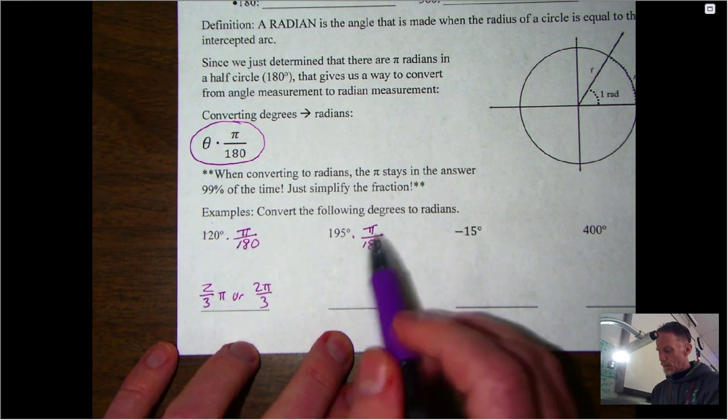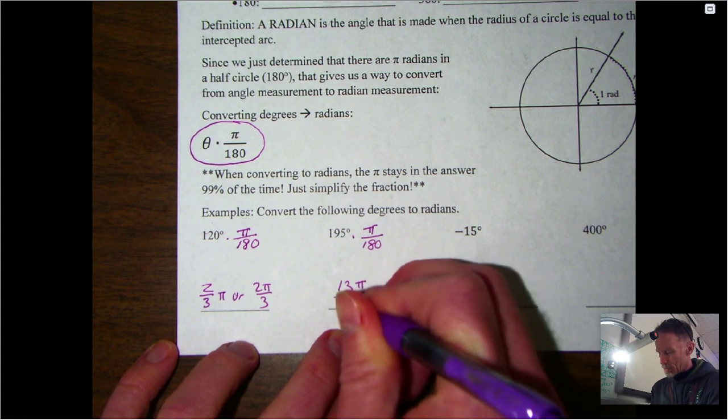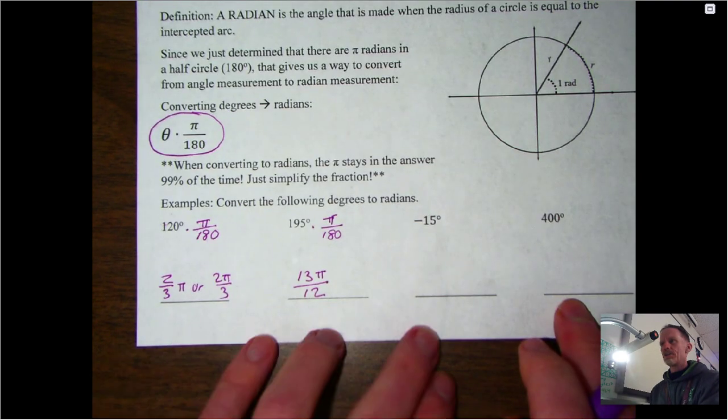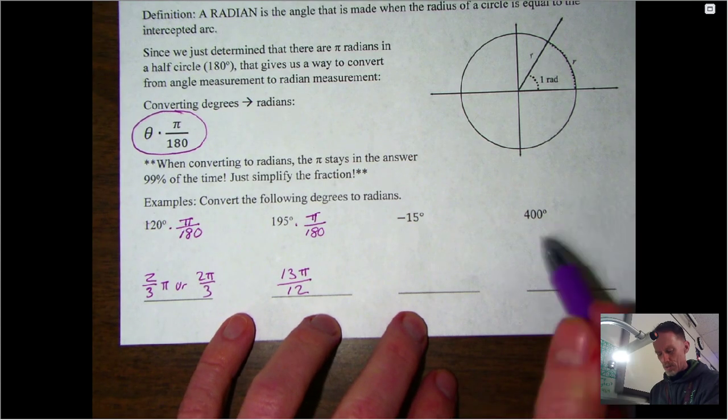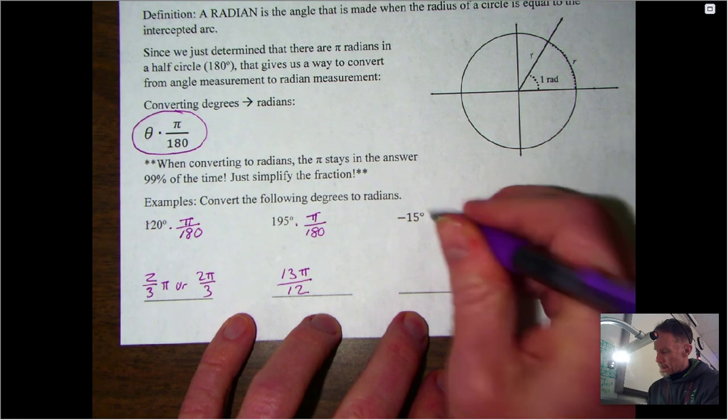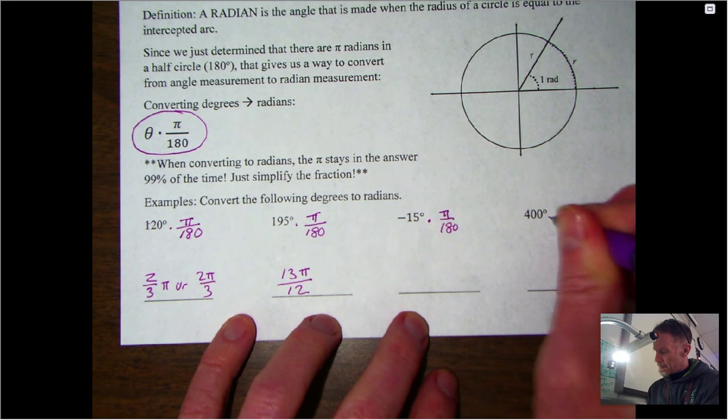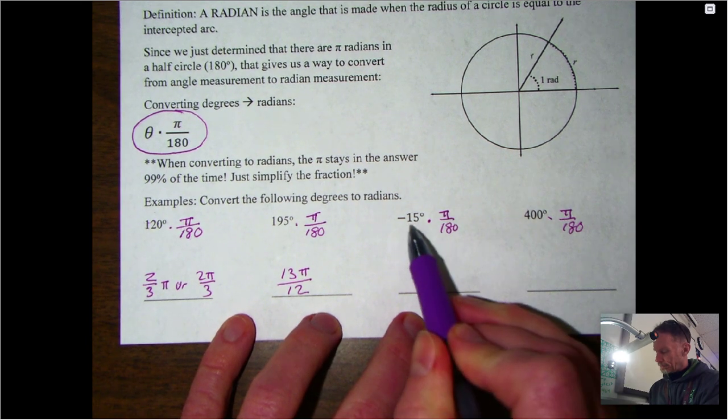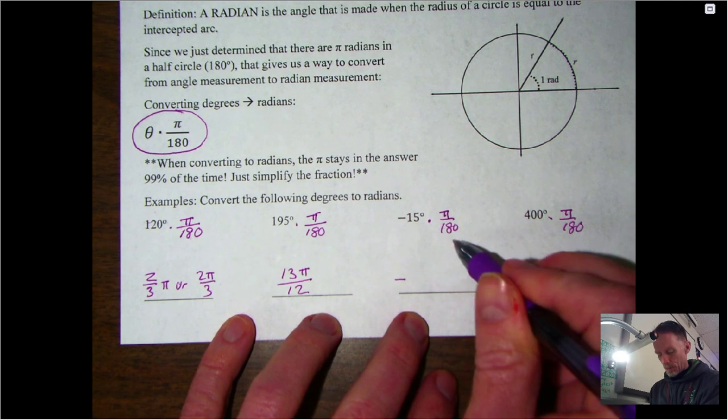If you want to pause the video for just a minute and do these last two on your own, then I'll go through and you can double-check your answers. Again, the negative doesn't matter—the answer is going to be negative. So -15 over 180, if you simplify that, that's 1 over 12, or you can also see that written as just -π over 12.